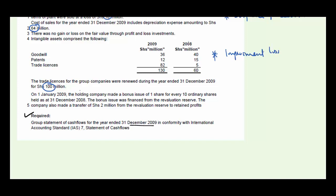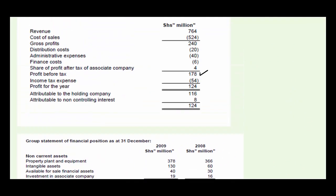Note five: the company made a bonus issue of one share for every 10 shares held, financed from the revaluation reserve. The company also made a transfer from the revaluation reserve to retained earnings. This tells us there must be some working for shares issued for cash, which we'll work out later. We continue identifying the easy marks first.